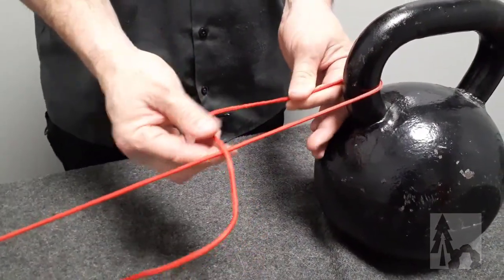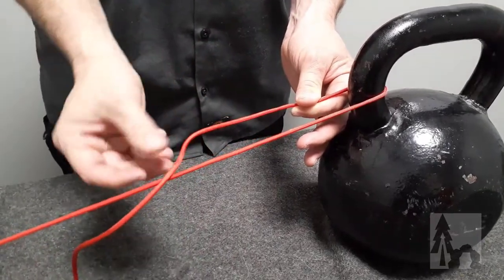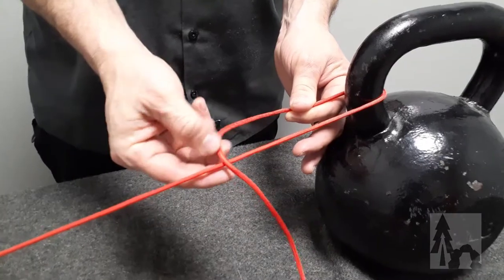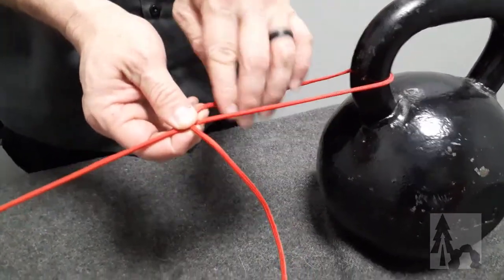So now I've made a loop. The loop is around the tree, and I'm going to hold that crossing. I'm just going to kind of pinch that crossing for a moment, right there. Now I've got that loop and that crossing.